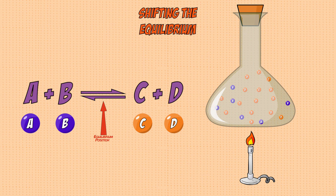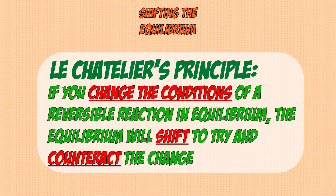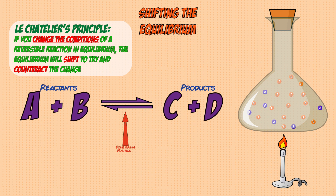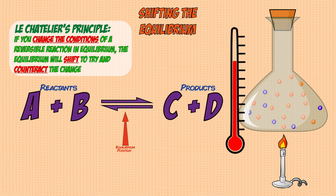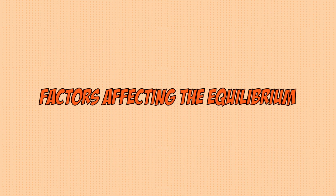You can predict which direction a reaction will shift using Le Chatelier's principle. This states that if you change the conditions of a reversible reaction in equilibrium, the equilibrium will shift to try and counteract the change. For example, if you increase the temperature, the equilibrium will shift in a direction that decreases it, allowing you to control the amounts of products and reactants.